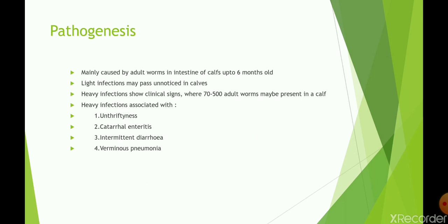Regarding pathogenesis: it is mainly caused by adult worms in the intestines of calves up to 6 months old. Light infections may pass unnoticed, but heavy infections — where 70 to 500 adult worms are present per calf — show clinical signs including unthriftiness, catarrhal enteritis, intermittent diarrhea, and verminous pneumonia.